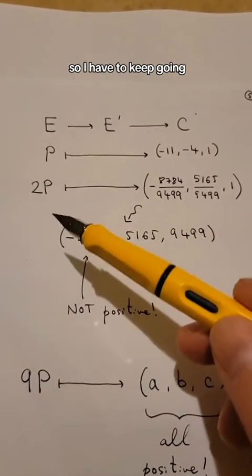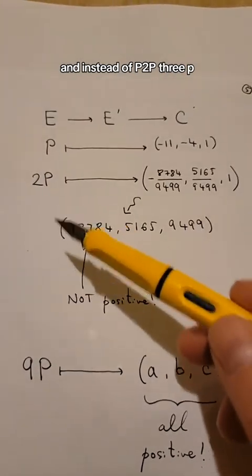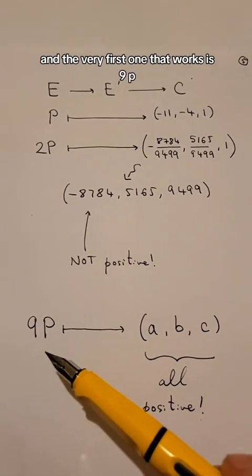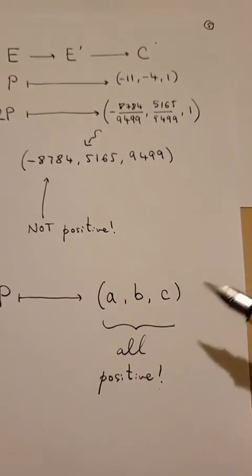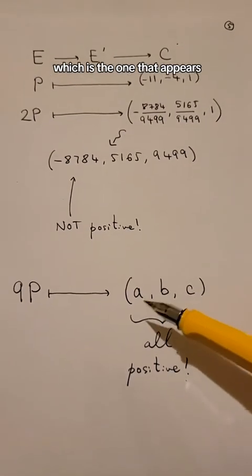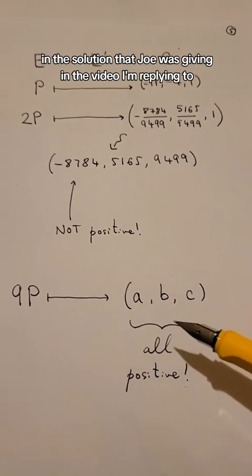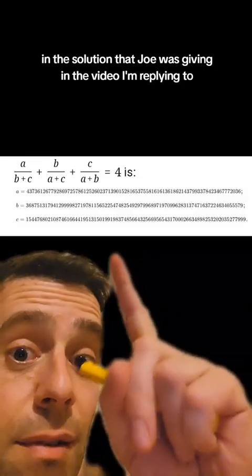So I have to keep going. And instead of P, 2P, 3P, I've tried all of them. And the very first one that works is 9P, which is the one that appears in the solution that Joe was giving in the video I'm replying to. That's the one.